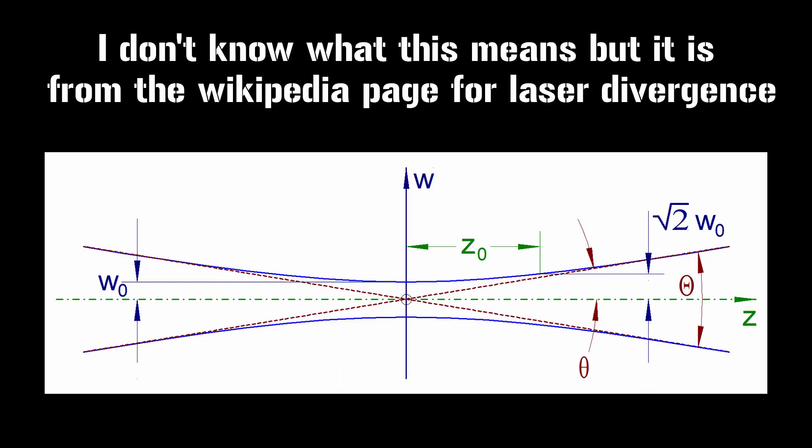I'm going to be talking about laser dispersion and laser accuracy. I don't know what these specs are for the Apache — that may be classified. I did a very small amount of research and couldn't find it. But all lasers, even though they're a really focused beam of light, have some dispersion or divergence — I think divergence is the correct term.